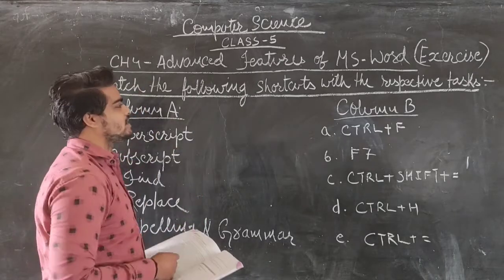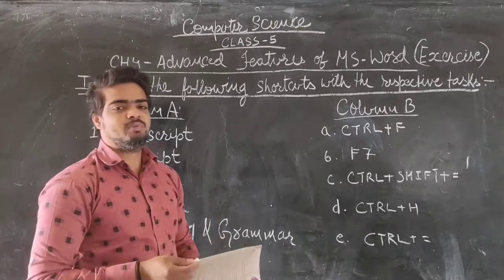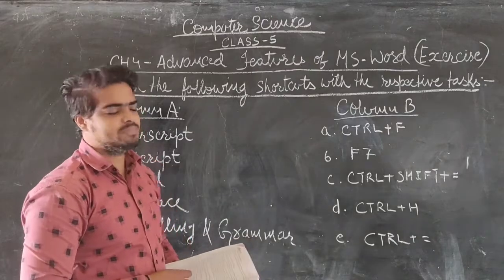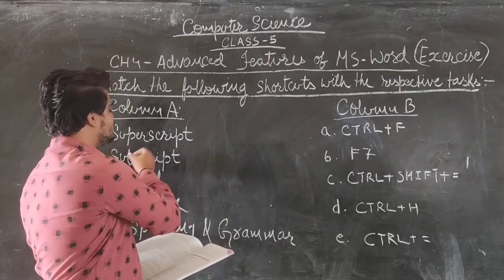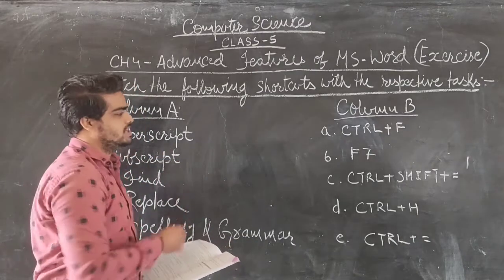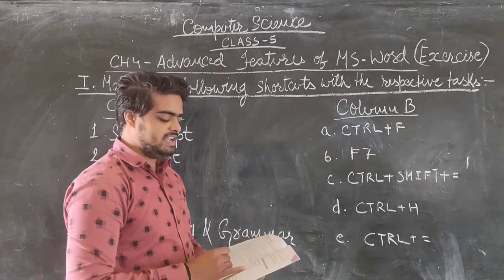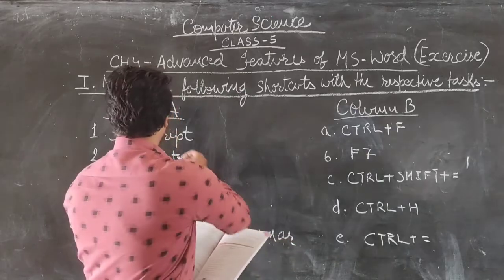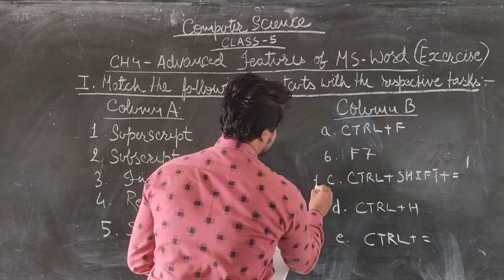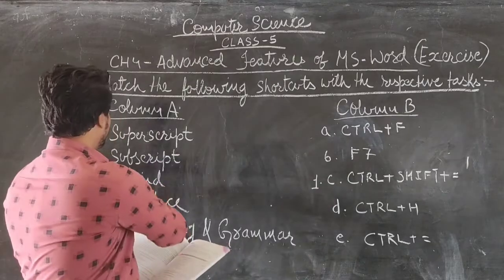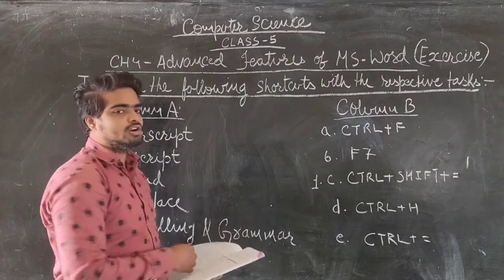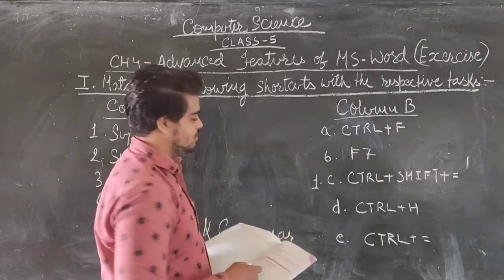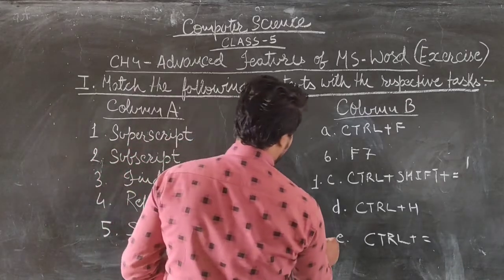First one: match the following shortcuts with their respective tasks. We have to match column A to column B. The first item is superscript, and the shortcut key for superscript is Ctrl + Shift + =. So the first one will match with option C. Second one is subscript, and the shortcut key for subscript is Ctrl + =, so it will match with E.